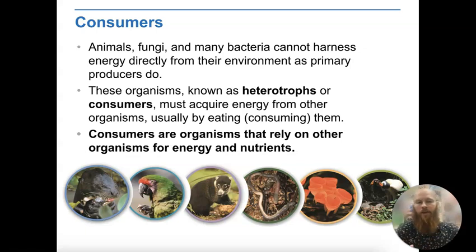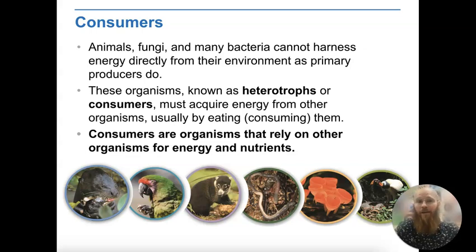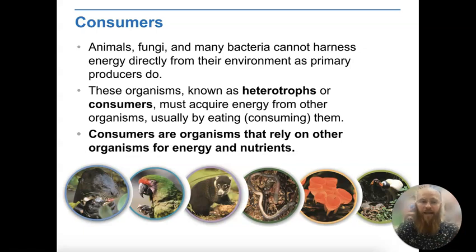Now we want to get into the heterotrophs — the consumers. We've produced usable forms of energy, so how do living beings access that stored energy? Animals, fungi, and many forms of bacteria can't harness energy directly from their environments the way primary producers do. These organisms, called heterotrophs or consumers, have to acquire their energy from other organisms, usually by eating or consuming them. Consumers are organisms that rely on other organisms for energy and nutrients, and there are six different types of consumers, each with unique ways of obtaining energy.